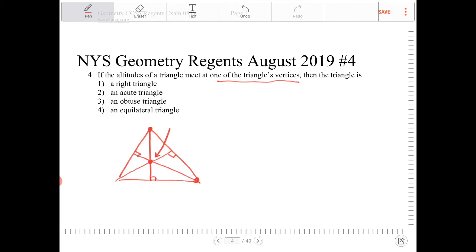We want to know what happens when the altitudes actually land on one of the vertices of the triangle, and then to justify what kind of triangle that is. That's the objective of this question. I have to admit, this is a rather tricky question.